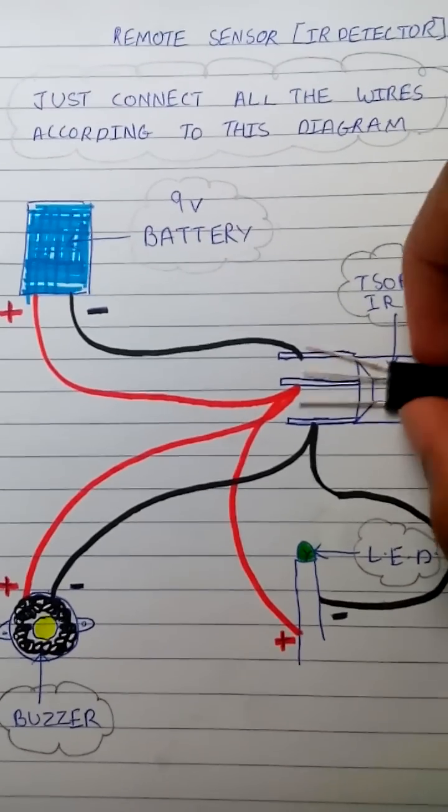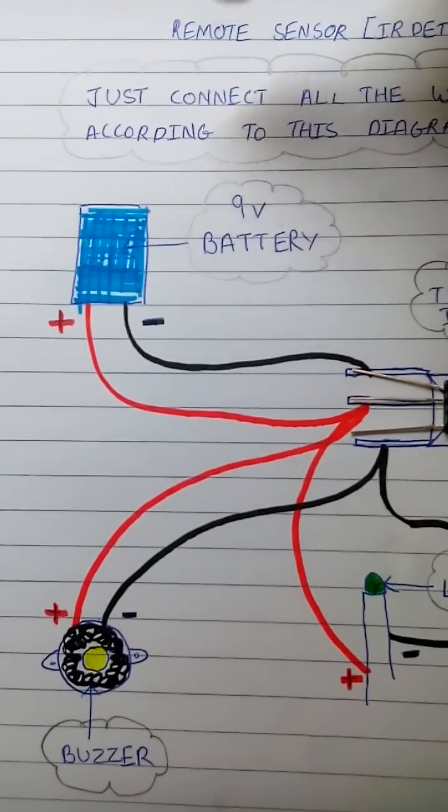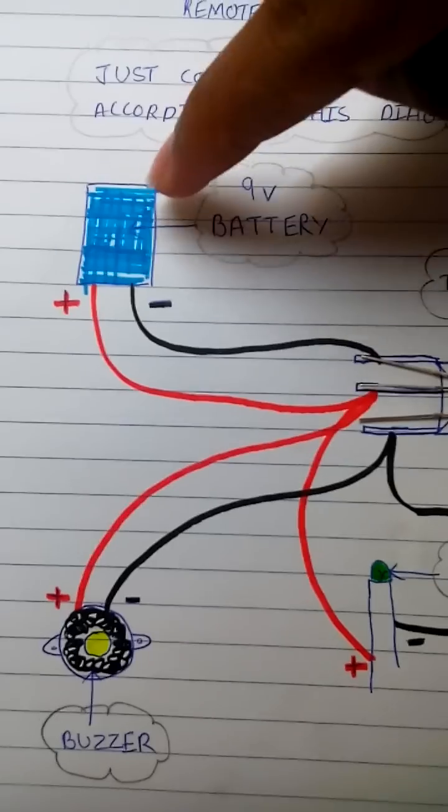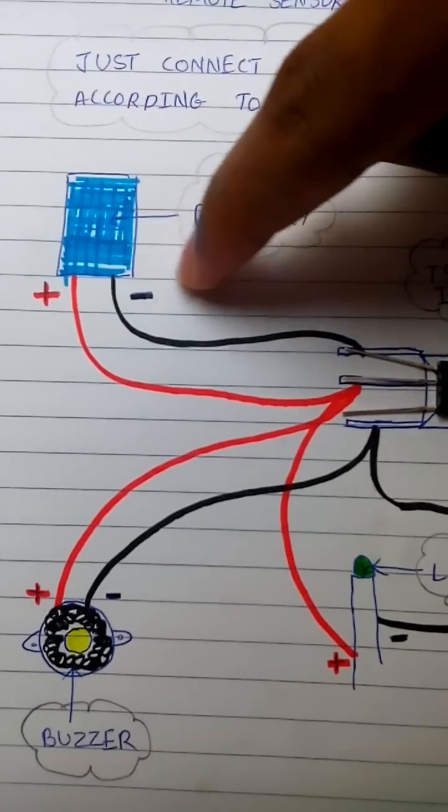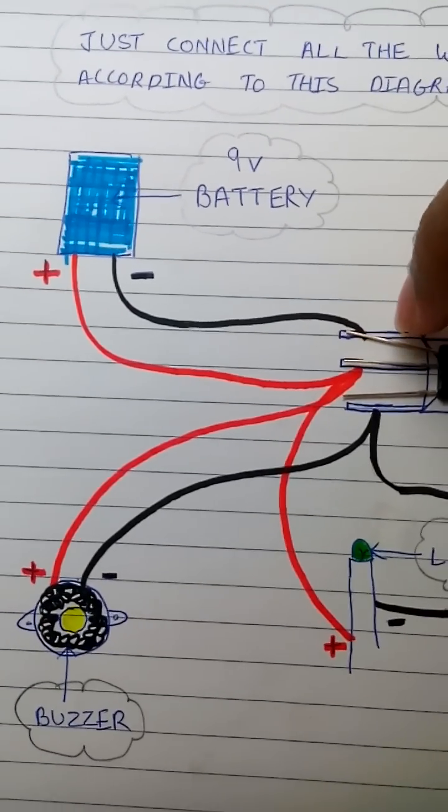Now I am just placing this TSOP1738 here for your convenience. So now here I go. The negative part of the battery goes to one end of the TSOP1738 IR resistor.